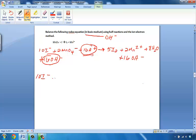10I minus and 2MnO₄ minus and 16H₂Os. What do we have over here? What do we have over here? 5I₂ and 2Mn²⁺. And 8H₂Os and 16OH minuses.